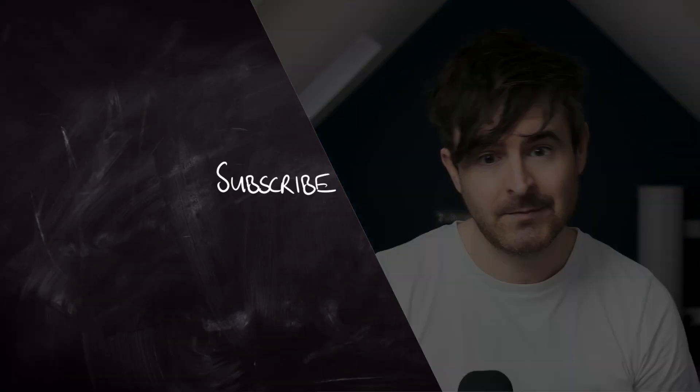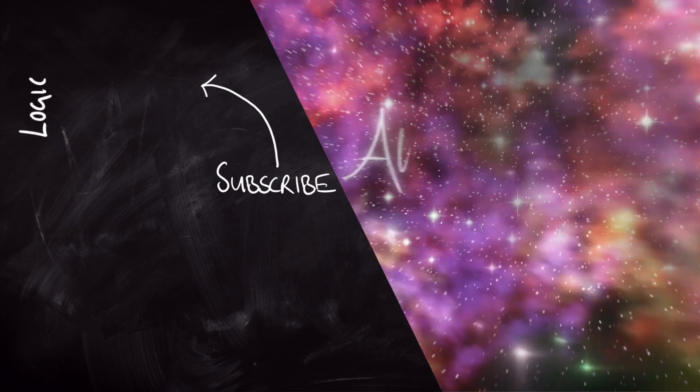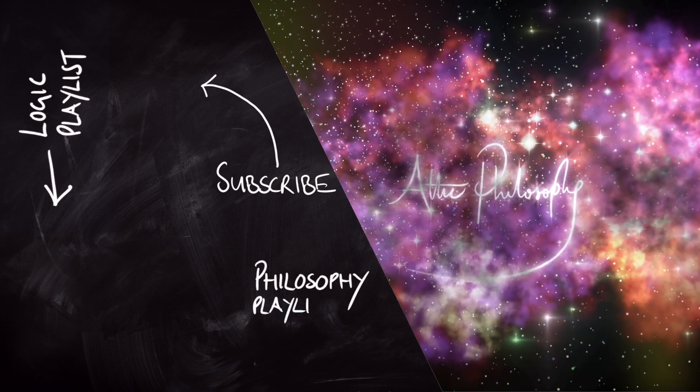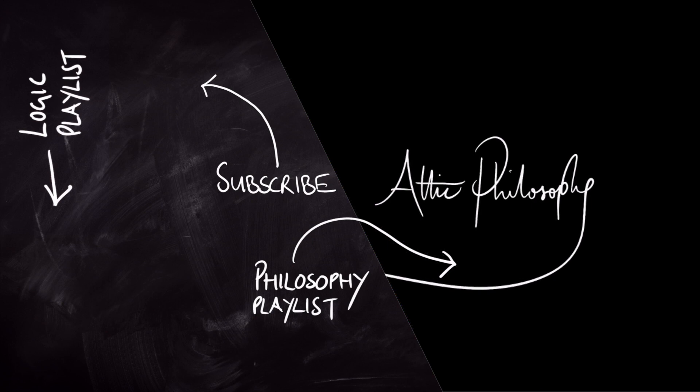We've gone through that super quickly. I've given you some countermodels but not proofs of validity — we're going to do more of that when we look at variable domain models in detail in the next video. So there you have your short look at the Barcan sentence and the converse Barcan sentence. We're going to say more about this in the next video on variable domain semantics for quantified modal logic. I hope you join me back for that — see you next time.